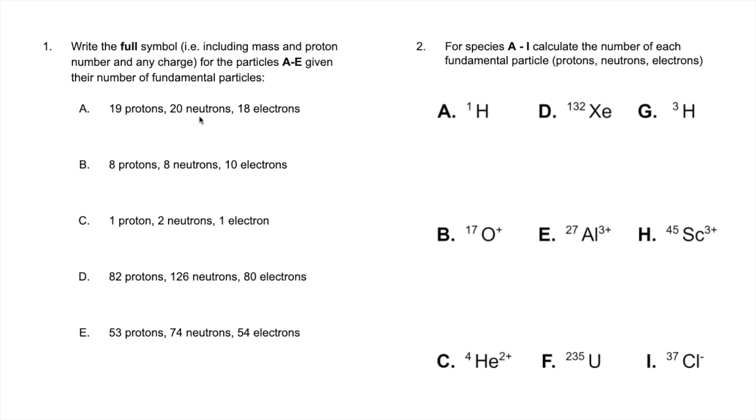The protons and neutrons give you the mass number. So we're going to have a mass number of 39. And the difference between the protons and electrons will tell you if there's any charge. So you can see we've got one fewer electron to proton. So this is going to have a 1 plus charge. So the full symbol would be that.